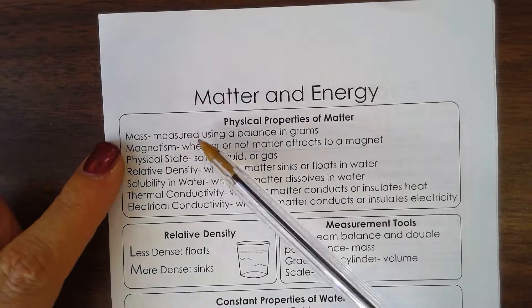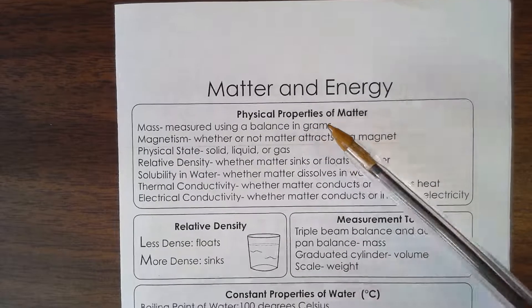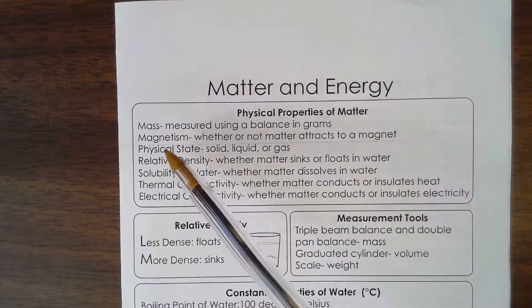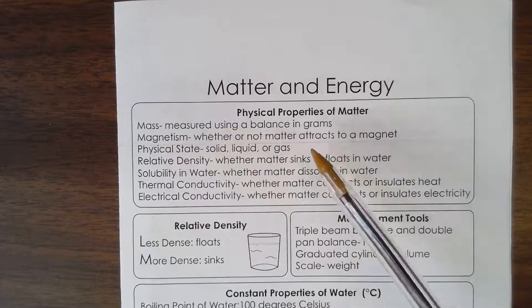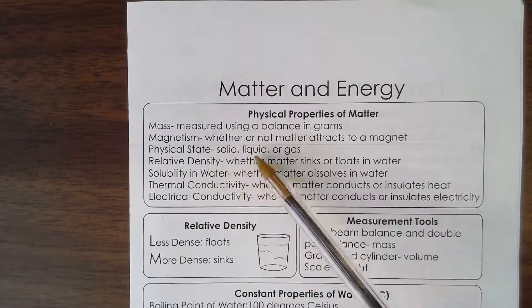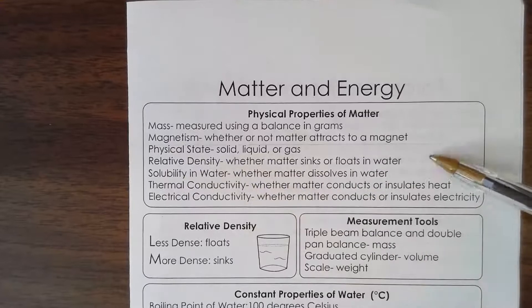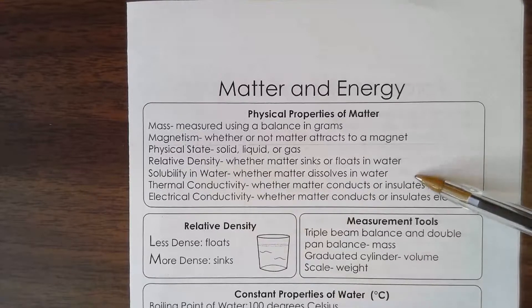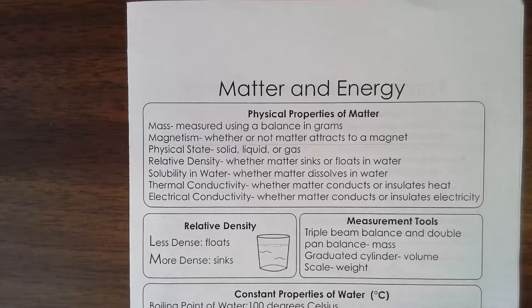You can take its mass — that means measuring using a balance in grams, on a triple beam or a double pan balance. Next, you can test its magnetism, whether or not the object is attracted to a magnet. Next is its physical state — whether it's solid, liquid, or gas. Then relative density, whether matter sinks or floats in water. Its solubility — you can test the item to see if it's going to dissolve in water. So if I have a stapler, is that going to dissolve in water? No.